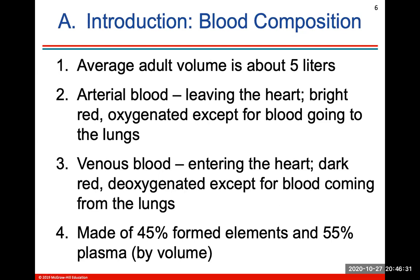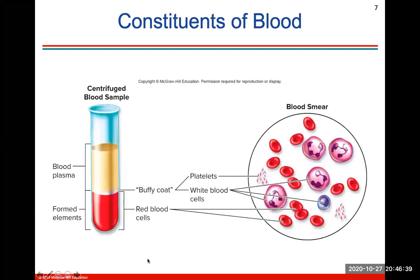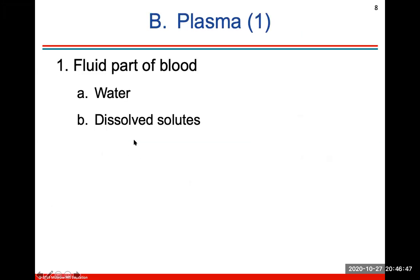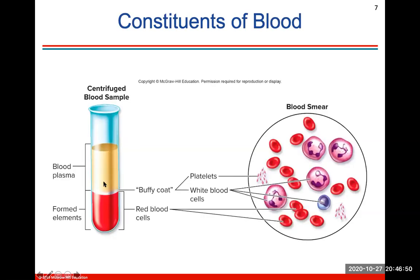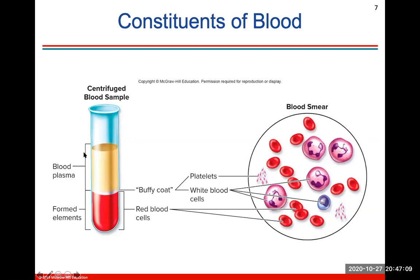Blood is made up of 45% formed elements, which are all of the cells and platelet components, and 55% plasma by volume. In a centrifuged blood sample, blood plasma floats to the top, the Buffy coat in the middle contains all platelets and white blood cells, and red blood cells — erythrocytes — sink to the bottom.